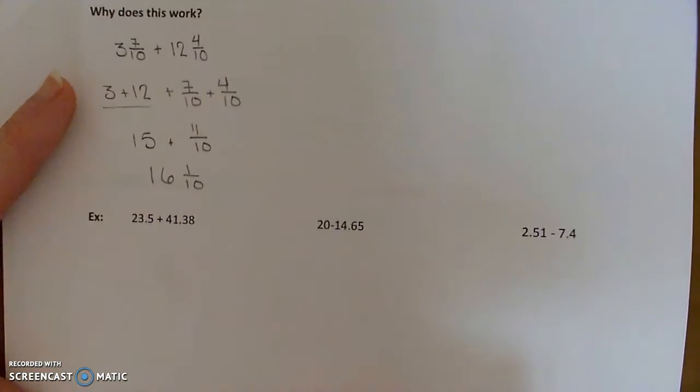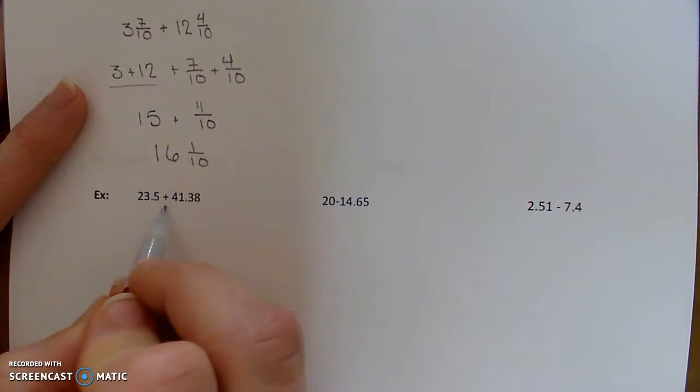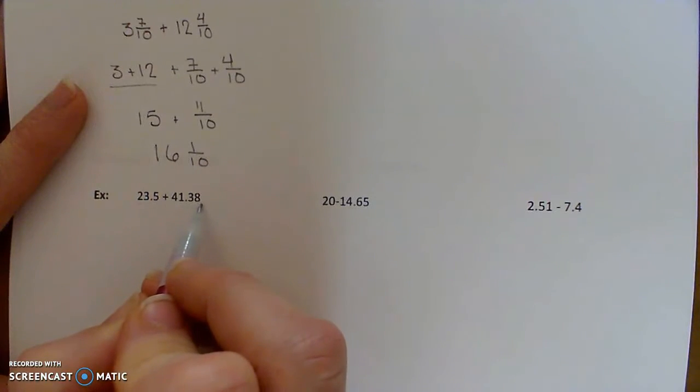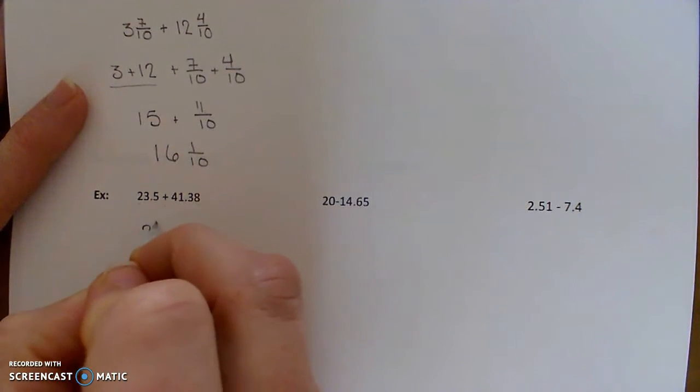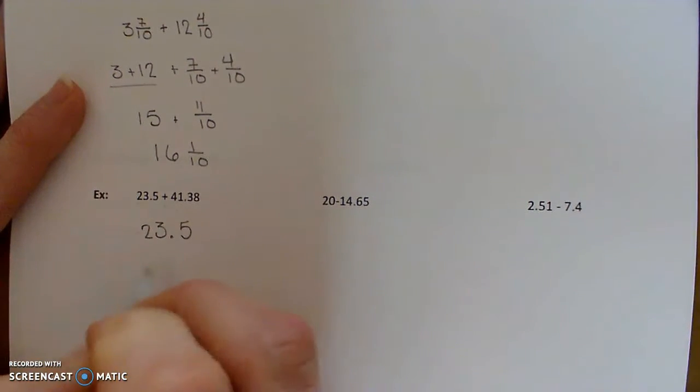All right, let's do a few more examples adding and subtracting decimals. That's 23.5 plus 41.38, and I would pause the video and try this on your own, and then replay it so you can check your answer.